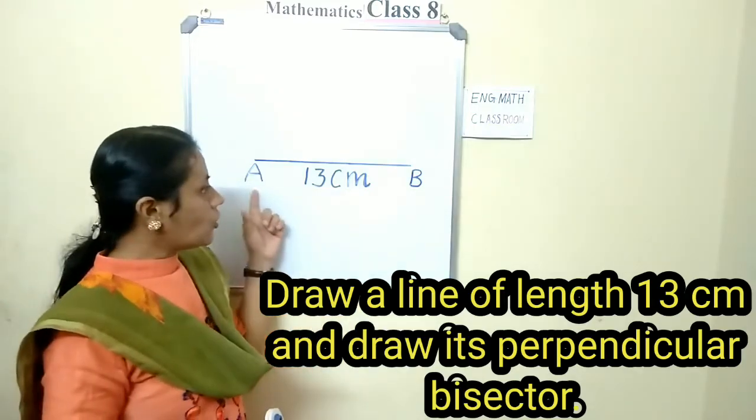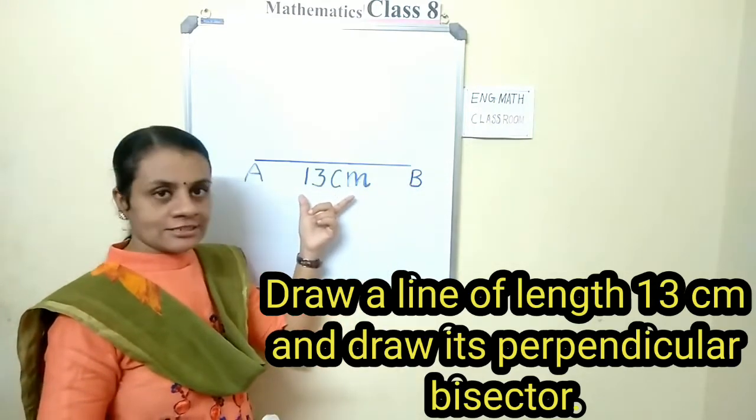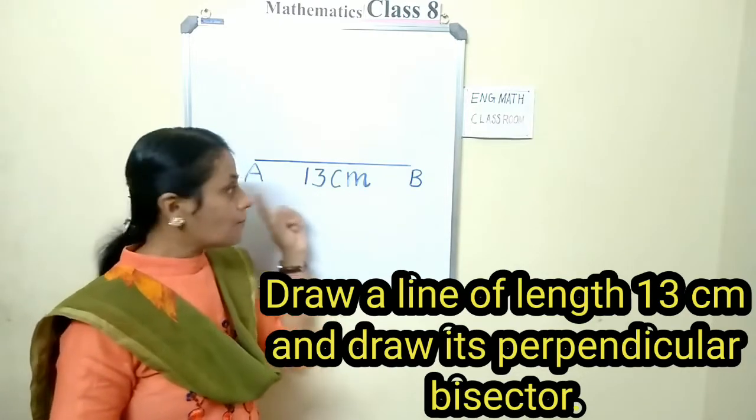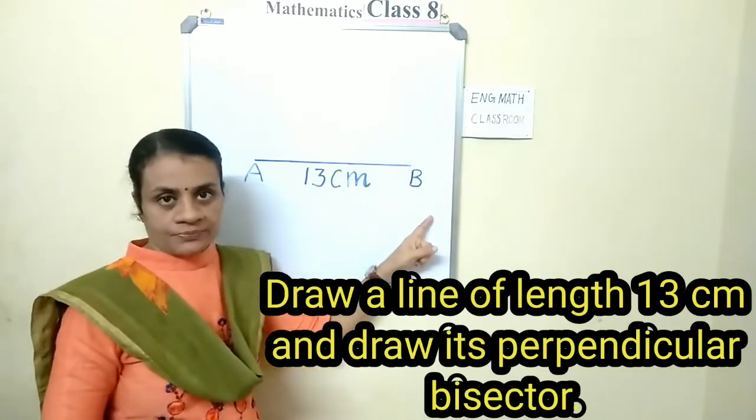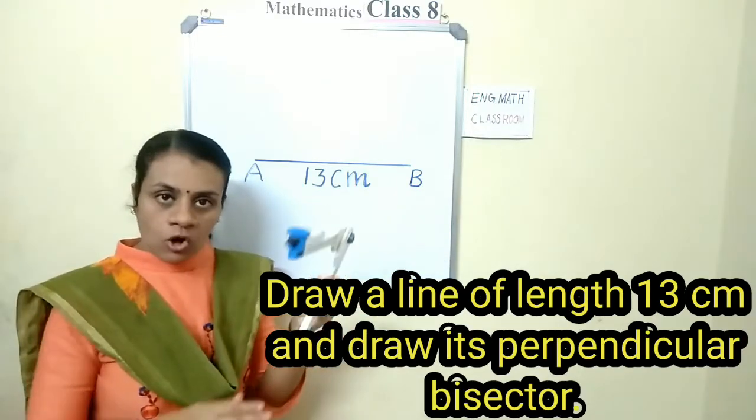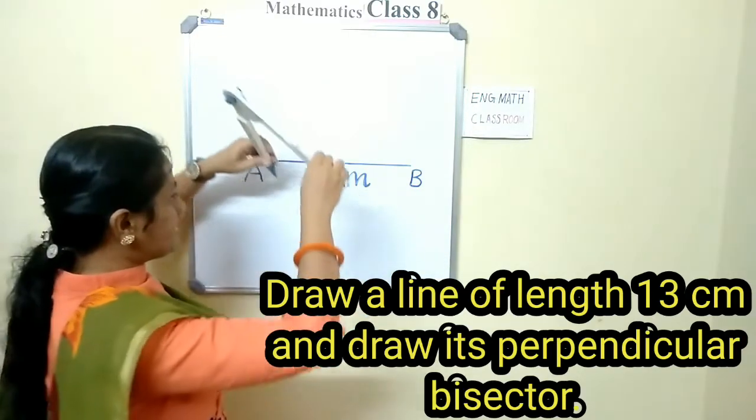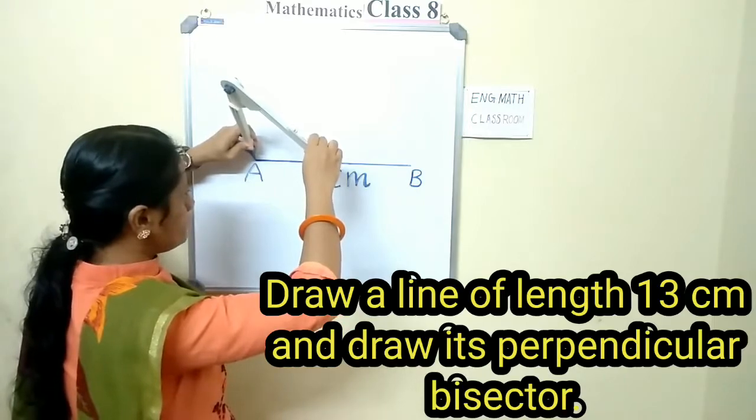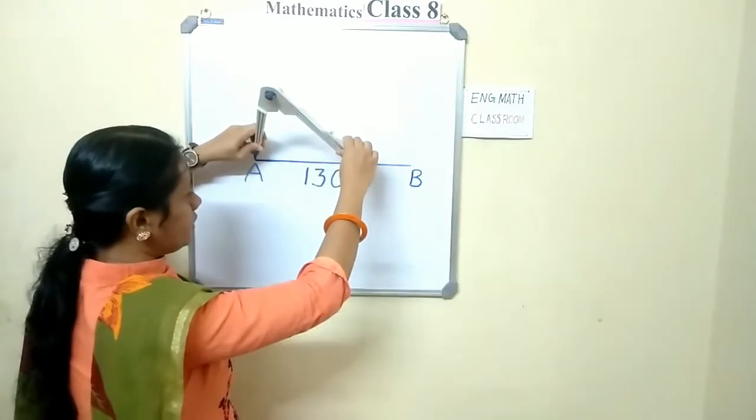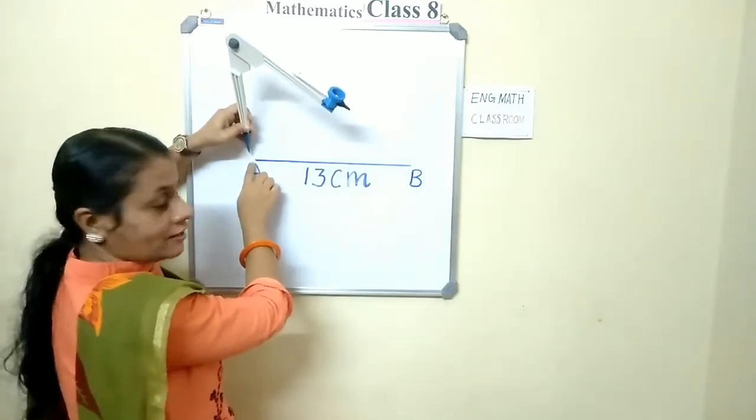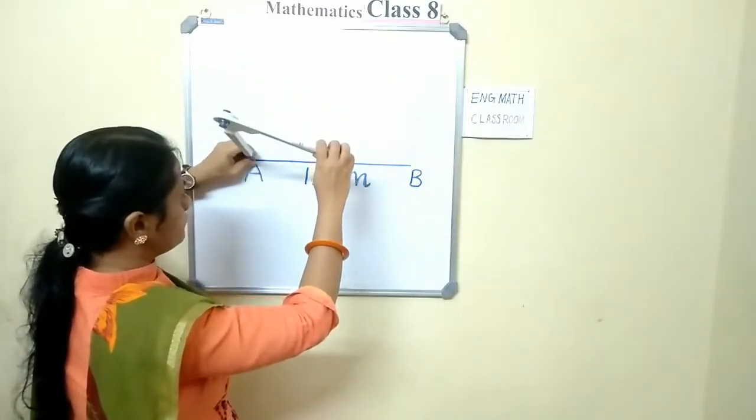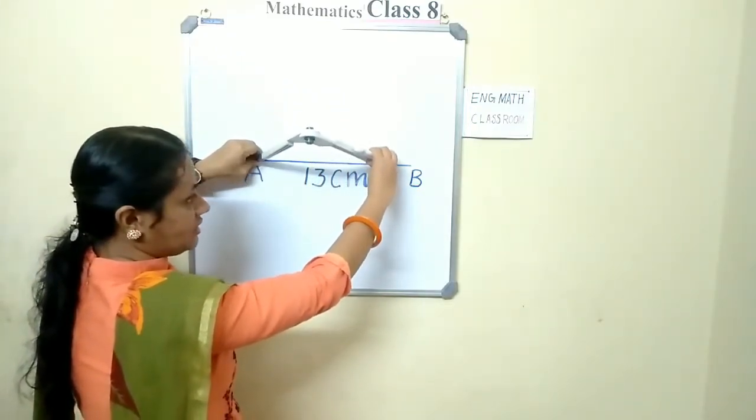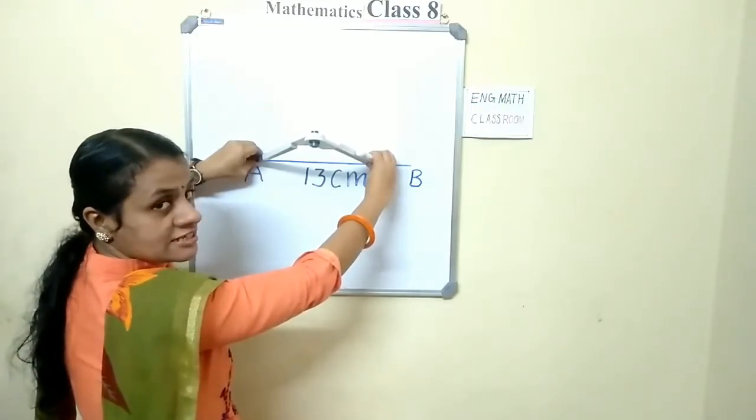Draw a line of length 13 centimeters and mark AB. Now, take a compass, extend it, keep it at A. Take the distance, three-fourth distance.